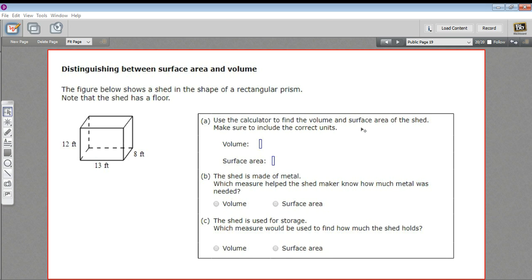It says use the calculator to find the volume and the surface area. So the volume is pretty easy. The volume is just the length times the height times the width, so 13 times 12 times 8. We'll punch that in the calculator. And I'm getting 1,248. Since this is volume, this would be cubic feet. So 1,248 cubic feet.